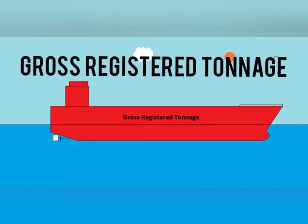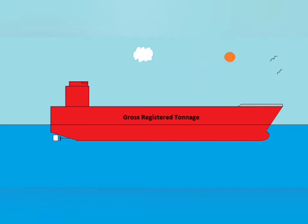Gross Registered Tonnage. It is a measurement of the volume of all enclosed spaces on a ship, with 100 cubic feet equivalent to one ton. For instance, if the total cubic volume of all enclosed spaces of a ship is one million cubic feet, then the gross tonnage will be 10,000 gross tons.